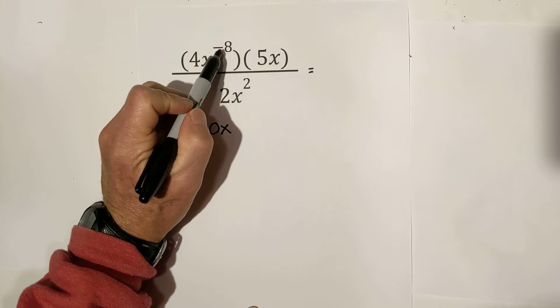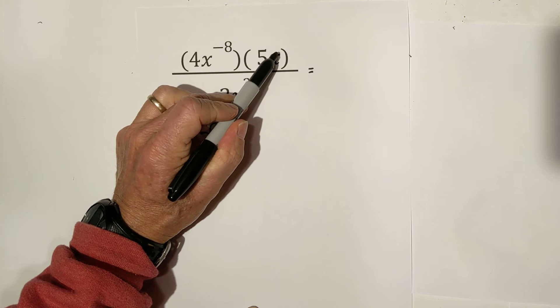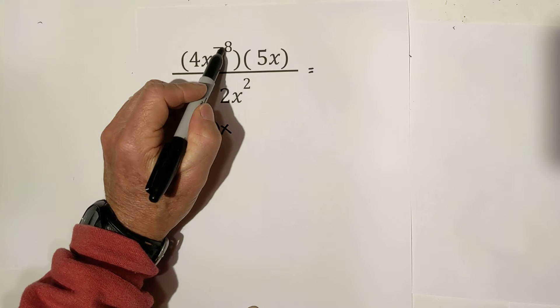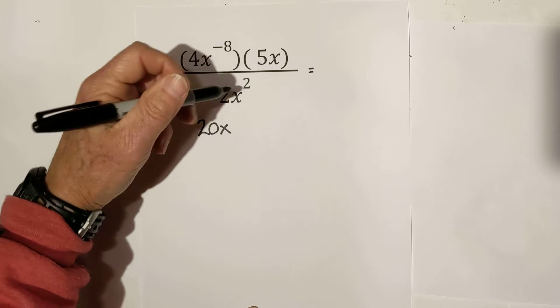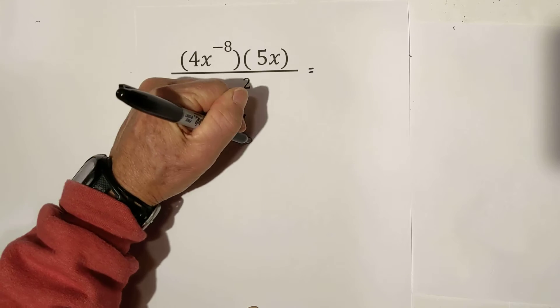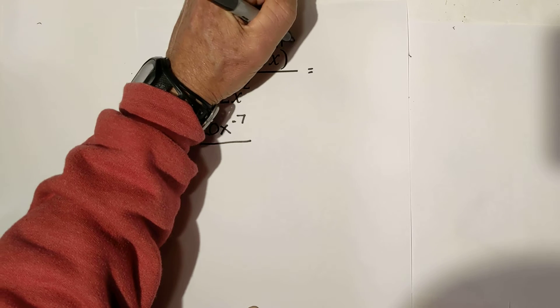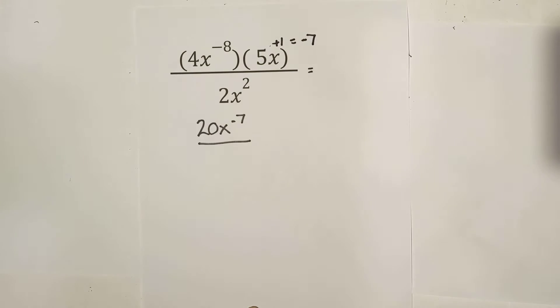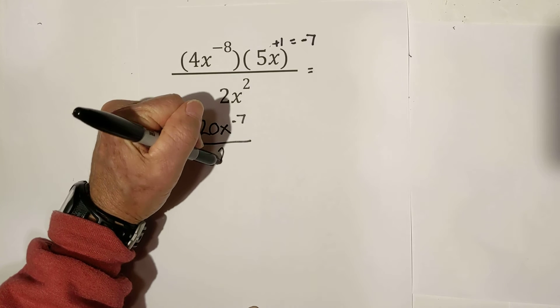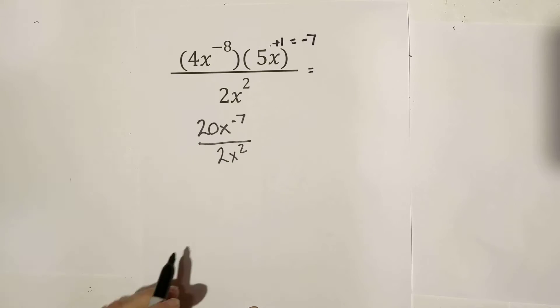And we have a negative 8 and a 1. Remember, same thing as before. We're going to subtract them. Negative 8 and positive 1 is negative 7. So, this is an 8, and right here you have a positive 1, and that gives you a negative 7. And then we have 2x squared.